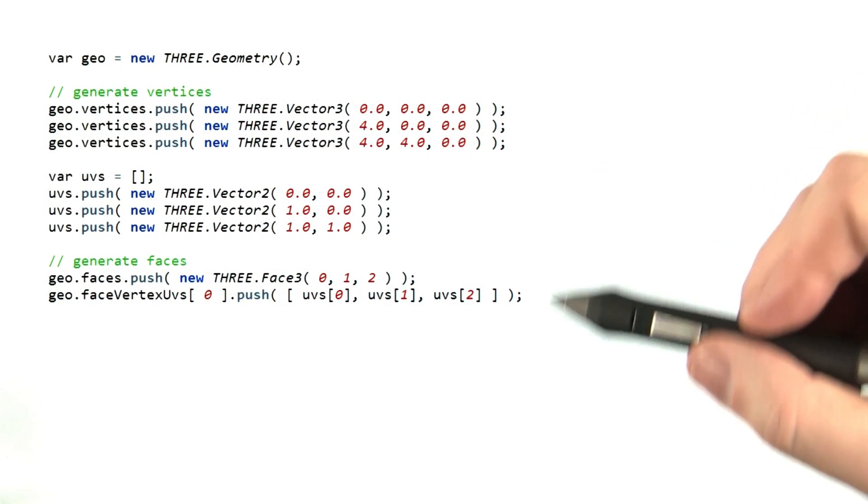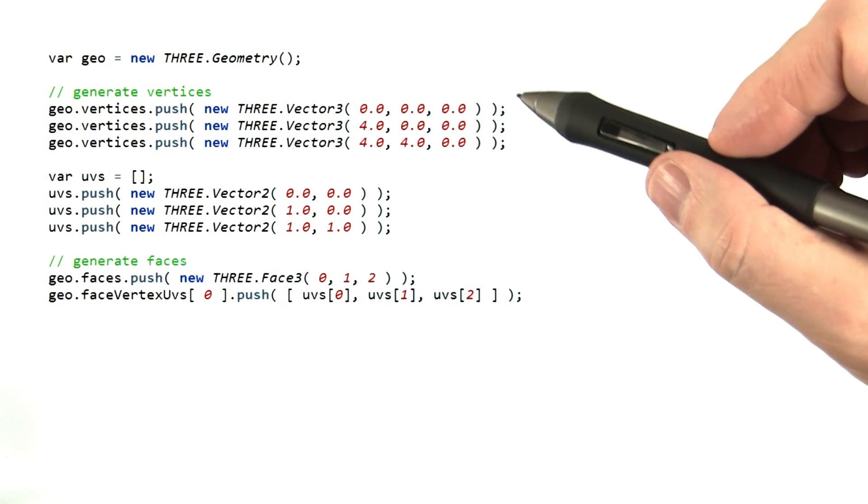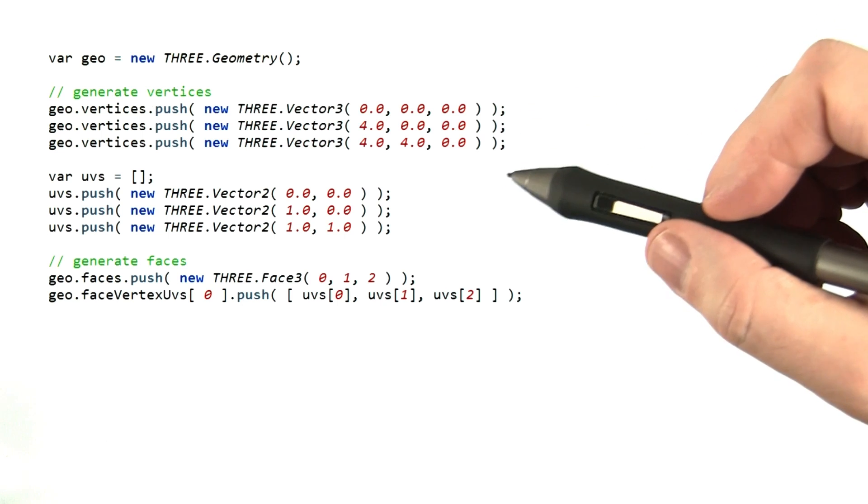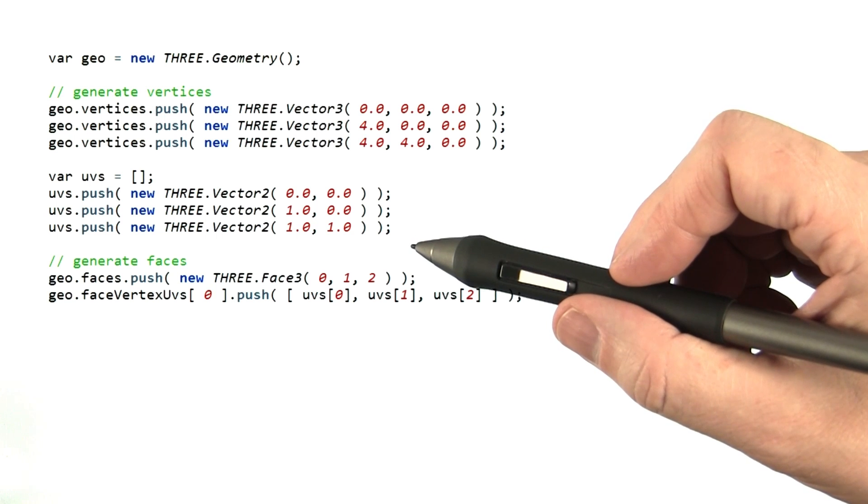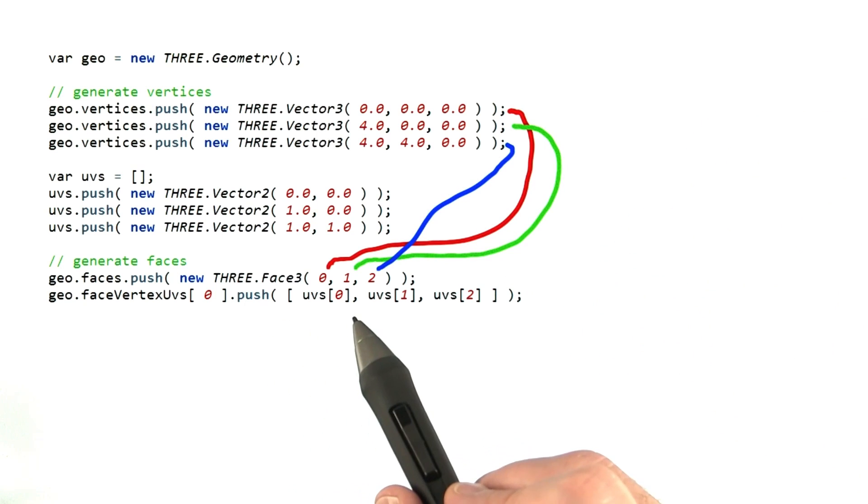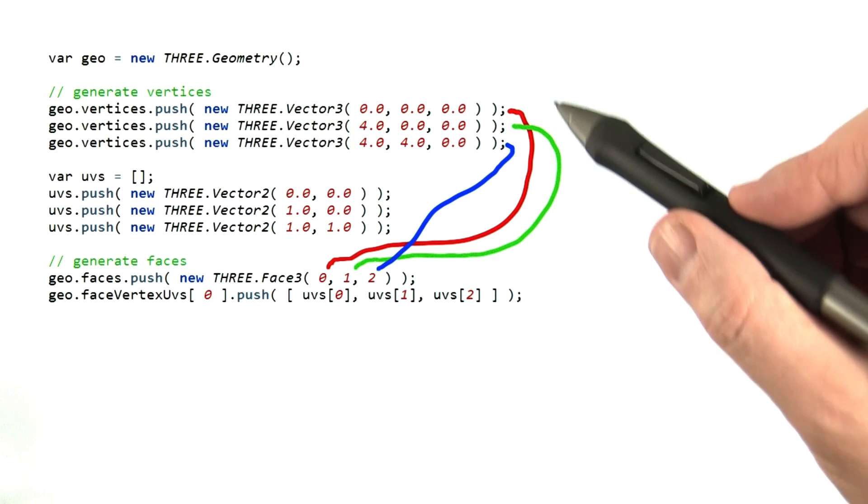The form for making a triangle with UVs is this code. Here, three vertices are defined and put inside the geometry object. Three UVs are created. I put them in an array so I can reuse any that I want. A face is defined as usual. The three numbers given are indices to the three vertex locations in the vertices array.